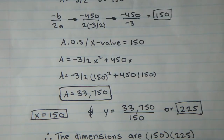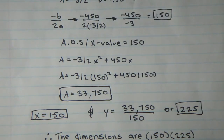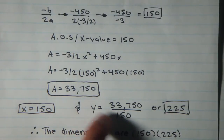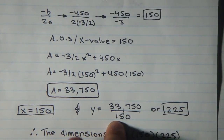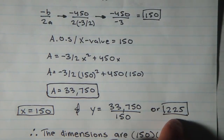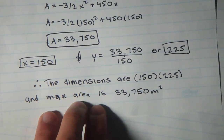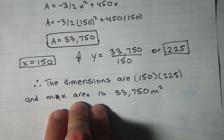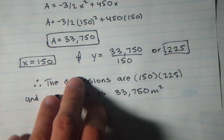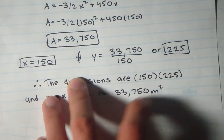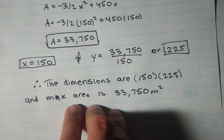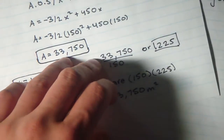To find the second dimension, I divided the maximum area by the known dimension: y equals 33,750 divided by 150, giving y equals 225. Therefore the dimensions are x equals 150 meters and y equals 225 meters, with a maximum area of 33,750 meters squared.